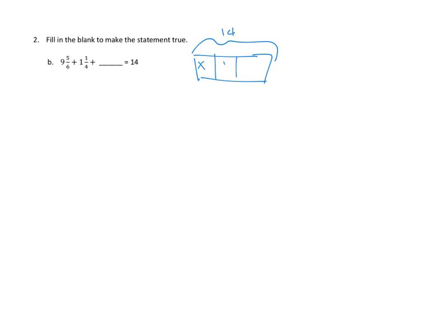So if we had part, part, part, whole, and we didn't know one of the parts, how would we find that out? Well, just looking at this diagram, we would start with the whole and we would subtract away each of the parts, and that would leave us with our missing part. I think we can do the same thing here. This is the same as 14, the whole, minus 9 and 5 sixths, minus 1 and 1 fourth. This part is the same as the whole minus the other two parts.